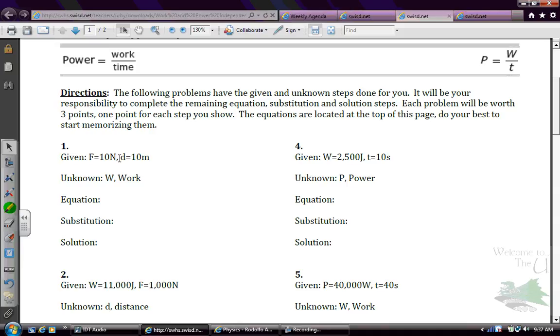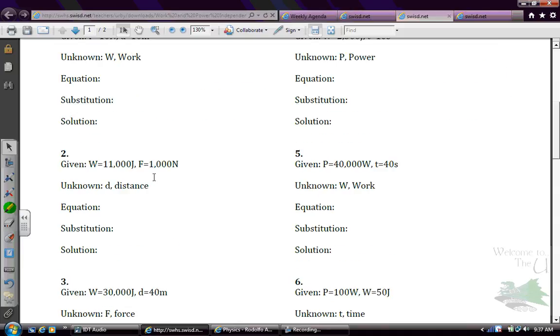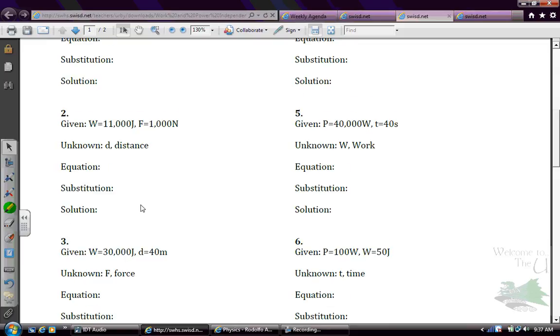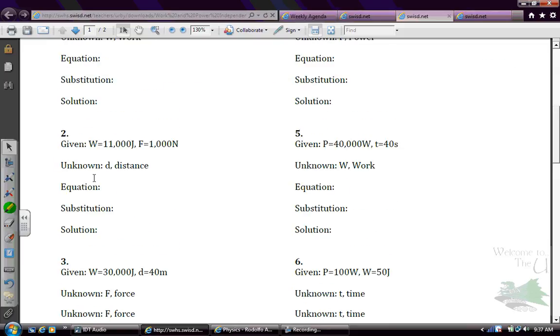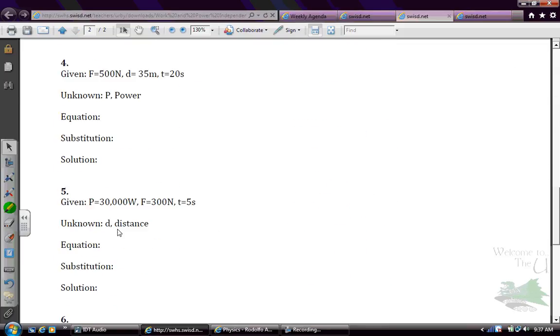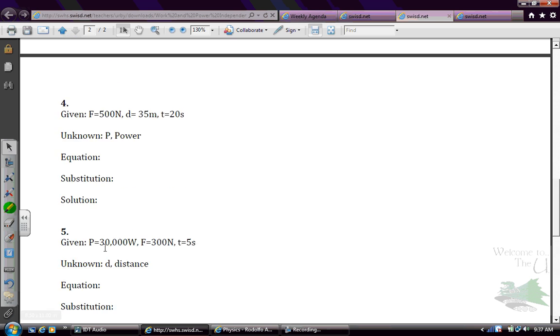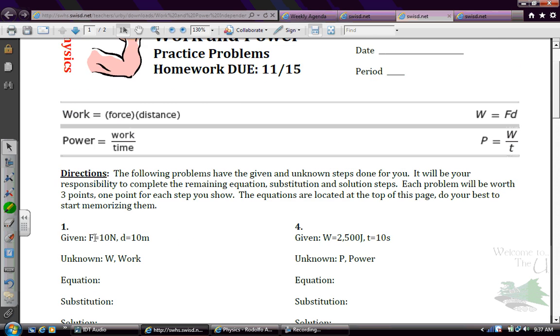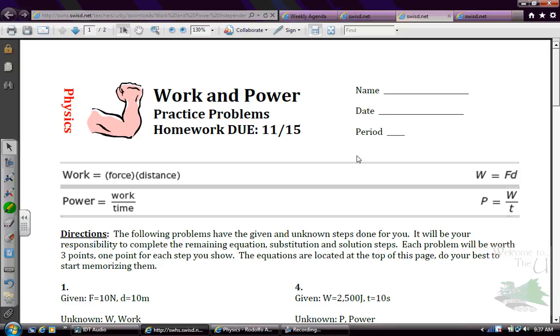You'll notice here that there are a total of nine problems. There is a typo here. It goes from 1 through 3, 4 through 6, and then it goes from 4 through 6 again. And that is a typo. This is actually 7, 8, and 9, so you can go ahead and change those if you want on your paper now. But this is actually going to be due tomorrow, so make sure that you have this and your lab completed and ready to turn in when you walk into class tomorrow.